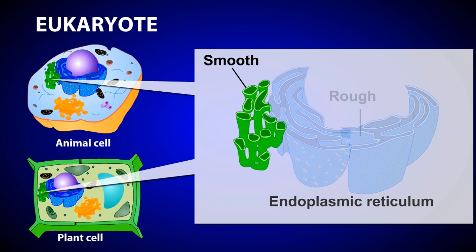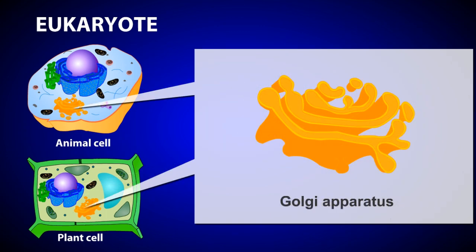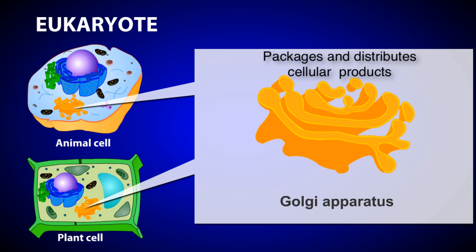The Golgi apparatus consists of a series of flattened sacs that resemble pancakes. Its job is to package and distribute cellular products that are destined for a specific location within the cell or for secretion. You can think of the Golgi apparatus as the post office of the cell, where packages are dropped off and destinations are assigned.